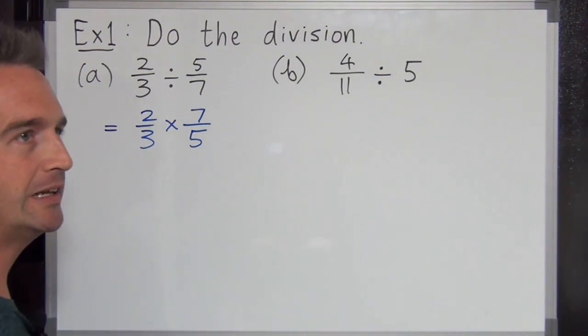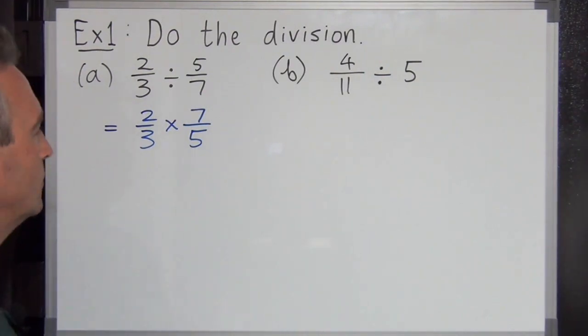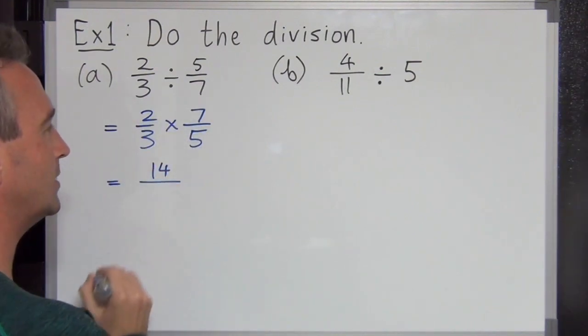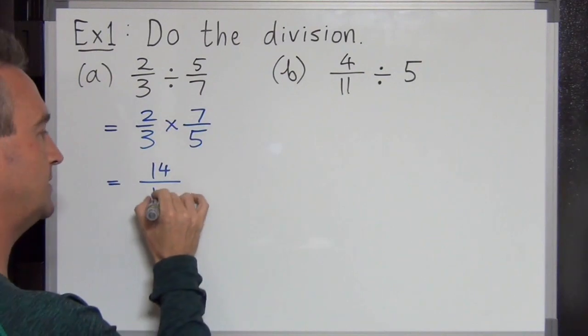Then we just do regular multiplication. Pretty straightforward. 2 times 7 is 14 on the top and on the bottom 3 times 5 is 15.